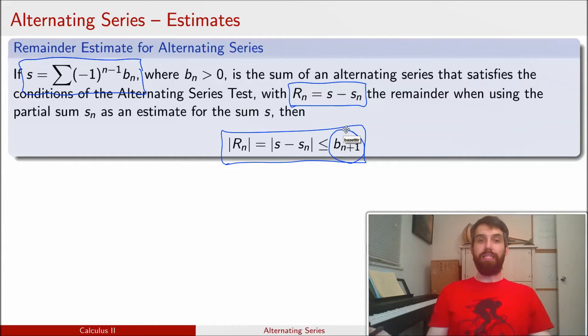So this is really simple. The claim for what the remainder is, I just look at whatever the n plus 1th term is, it's going to be that value. And the intuition here comes from the same picture.